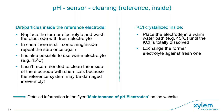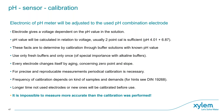The zero point and slope of pH sensors change over time, so regular adjustment is required. What is commonly called calibration is really a relative adjustment of the pH meter to the actual slope and zero point of the used electrode. The most common is a two-point calibration with two buffers, for example pH 4 and pH 7. Multi-point calibration is also possible. It is very important to use only fresh buffers and only once. The frequency of calibration depends on the kind of samples and individual demands — a standard might be weekly, but some operators calibrate twice a day. Remember: it is impossible to measure more accurately than the calibration was performed.